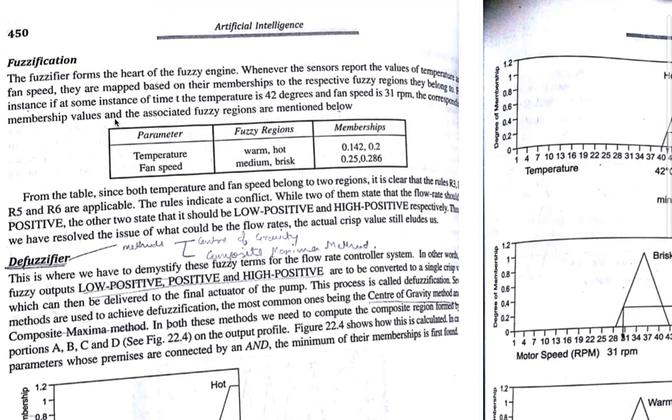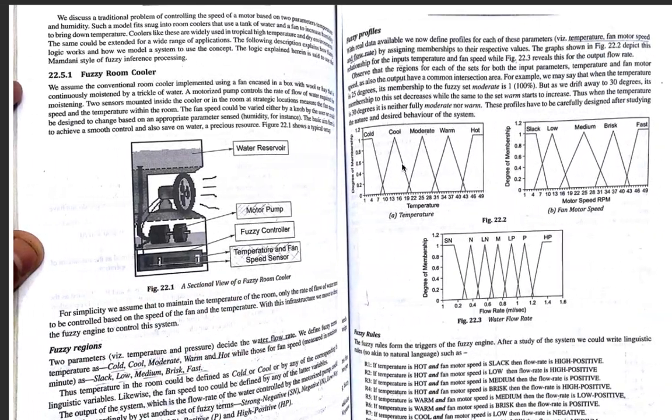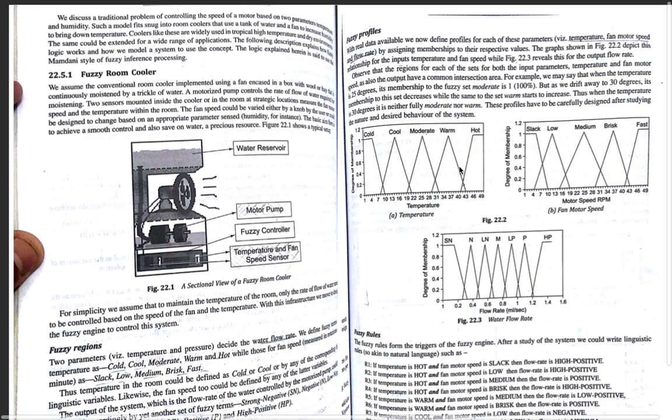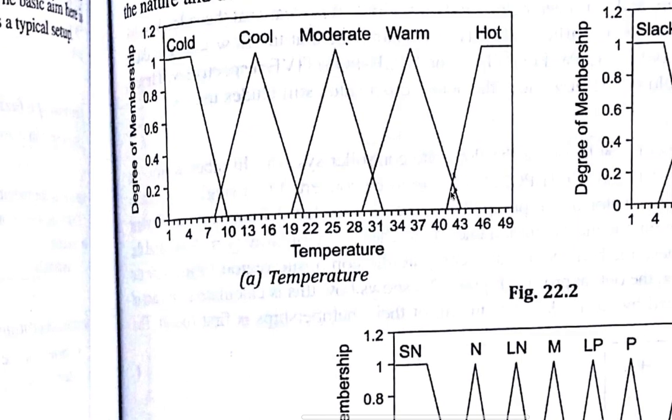Now, we have fuzzified. Let's see the parameters at 42 degree and fan speed 31 RPM. If you see at 42 degrees, the temperature is both warm and hot. There's no crisp boundary, so it's both. If you can see that there's a little dash here, the warm value is below 0.2 and hot value is 0.2 here.